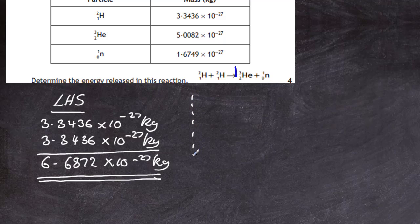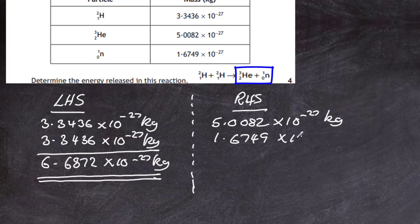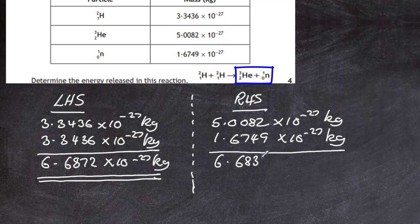Next we go to the right hand side of the nuclear equation and find the total mass there. We have 3He at 5.0082 times 10 to the minus 27 kilograms, and we add the neutron 1n at 1.6749 times 10 to the minus 27 kilograms. Since they have the same order of magnitude we simply add them, giving 6.6831 times 10 to the minus 27 kilograms. Always double check your calculations on your calculator.